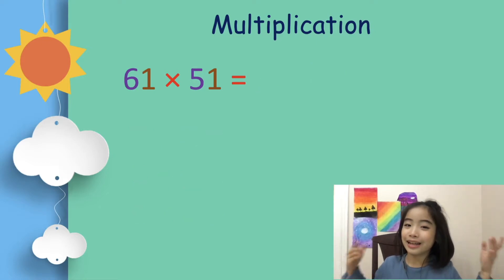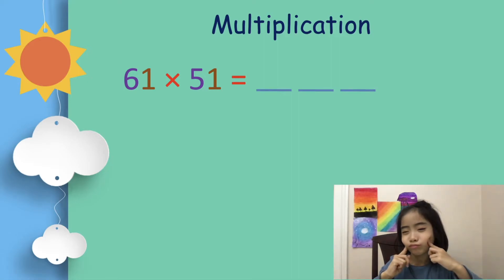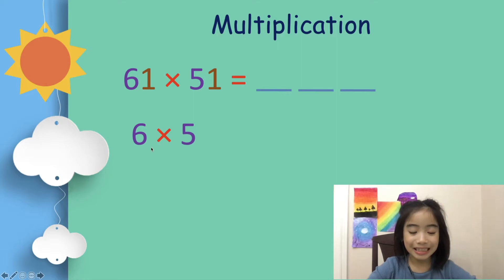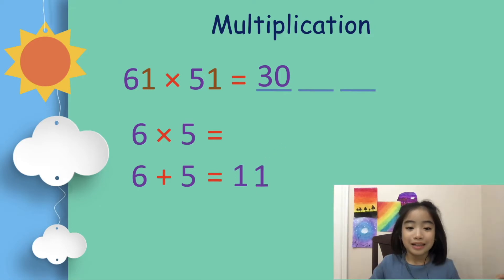Now, let's look at another trickier problem. It's 61 times 51. So what's the answer? First, 6 times 5 equals 30. Let's put the 30 in the 100th position. And of course, the 3 is in the 1000th position. But I just put the 30 in the 100th position to make it easier to show. Now, we have 6 plus 5 equals 11. Because 11 is a 2-digit number,